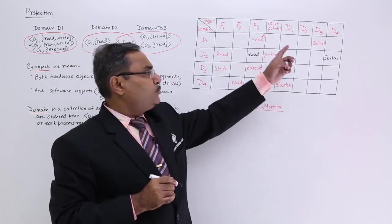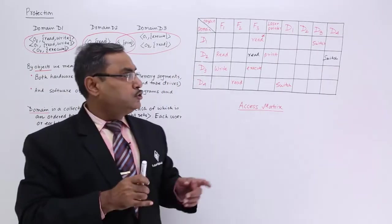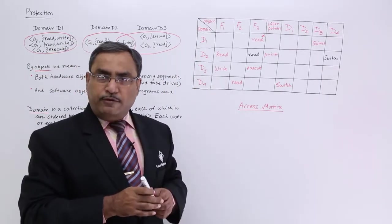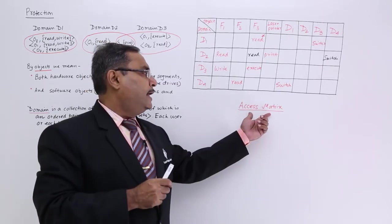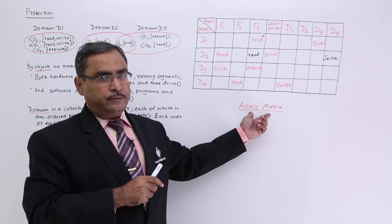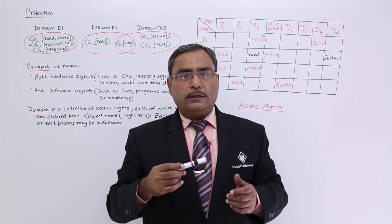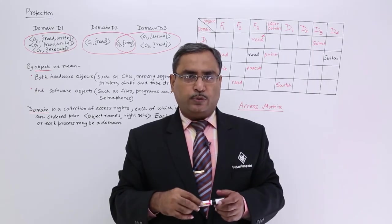So, in this way the full domain and this particular object can also be expressed in this matrix form also known as the access matrix which is very much important in our protection. So, I think you have got the logic and in the next sections, we are going to discuss some other topics please be with us.